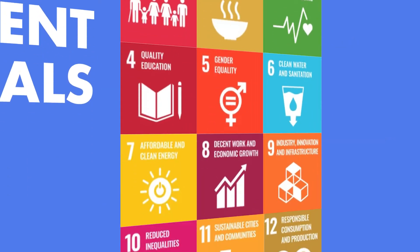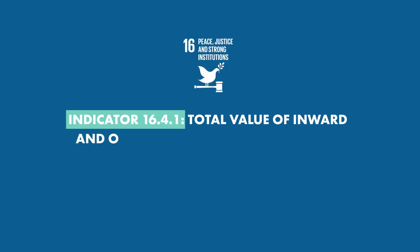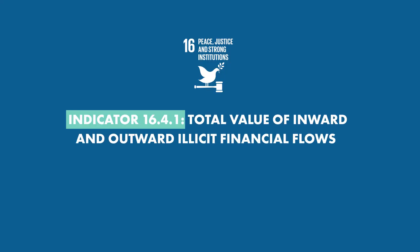Indicator 16.4.1 of the UN Sustainable Development Goals calls for the measurement of the total value of what is known as illicit financial flows, or IFFs. In order to curb, manage, or reduce illicit financial flows, one needs first of all to know them, to know the key sources of them, but also to measure them.